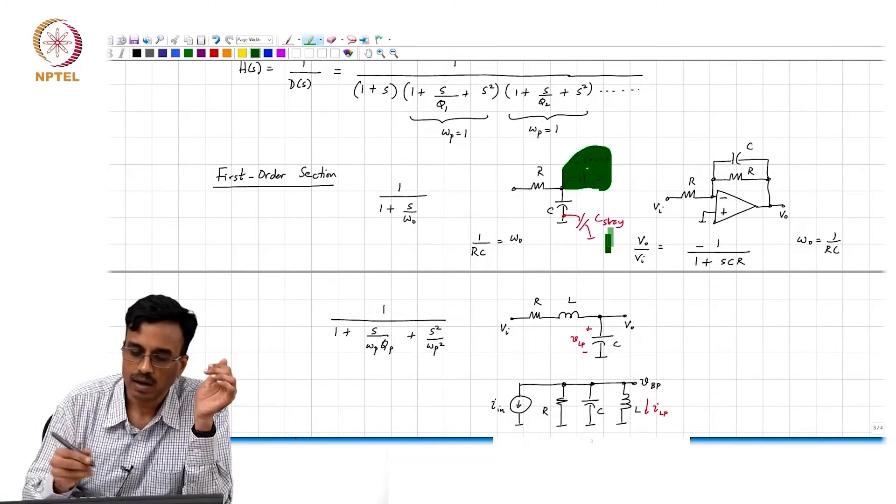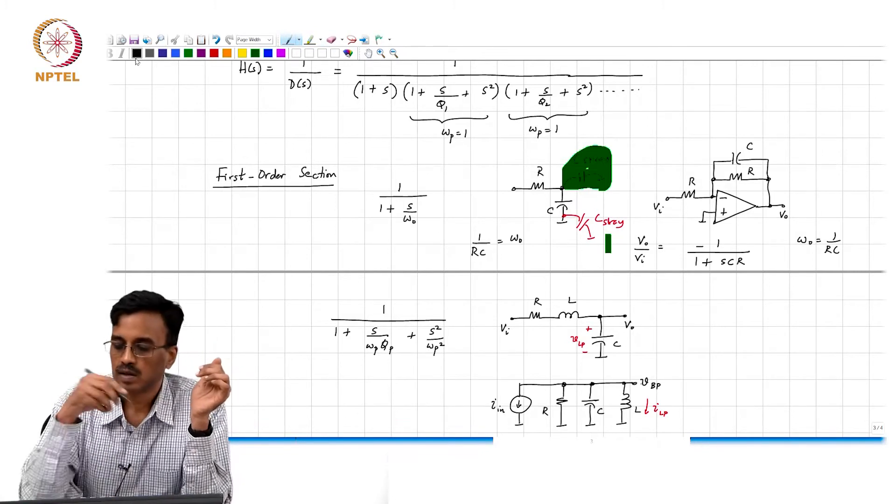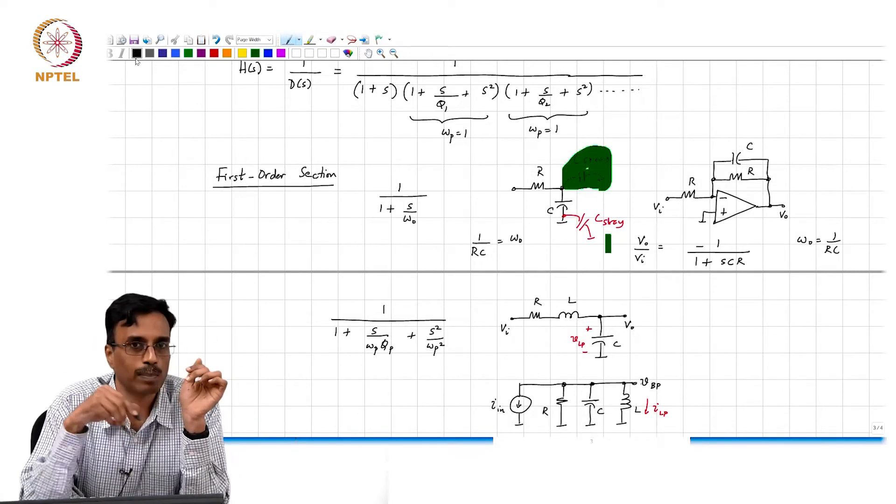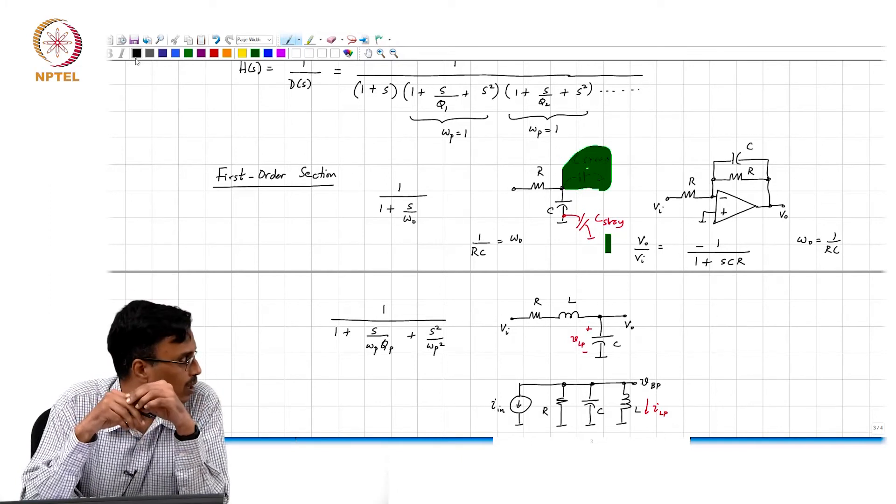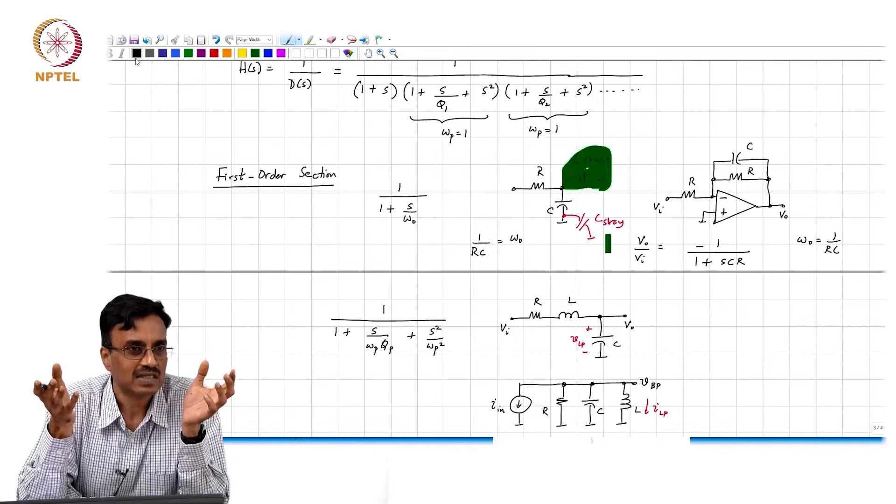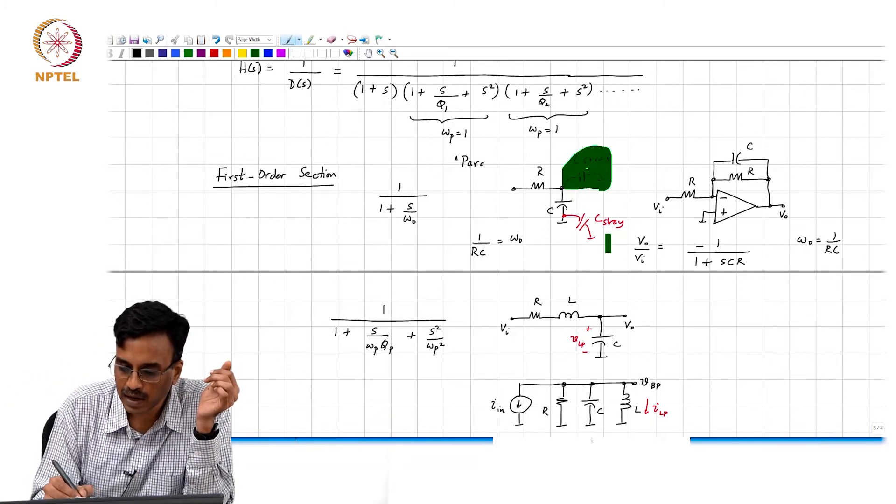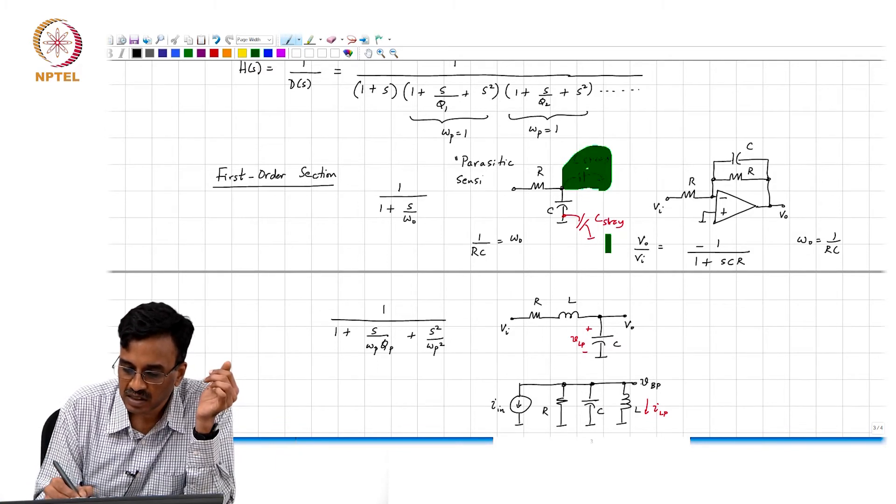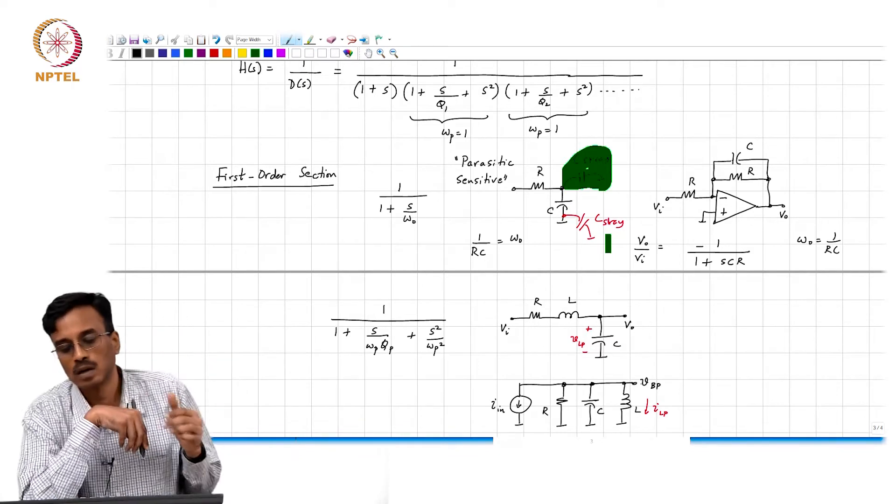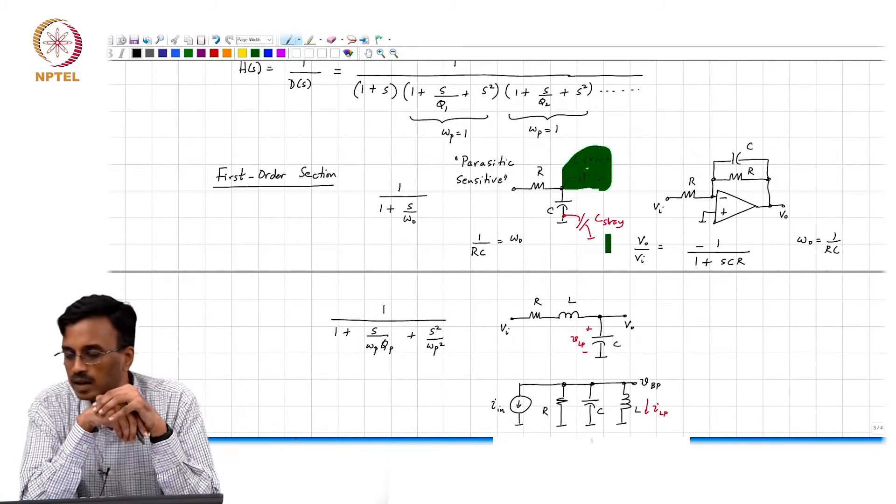But unfortunately, what you have is bandwidth which is 1 over R times (C plus C_stray). So this is basically what you call a parasitic sensitive build.